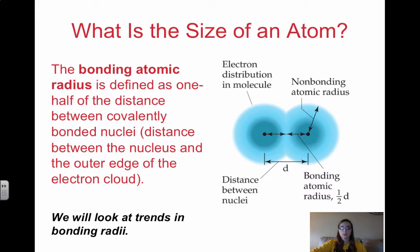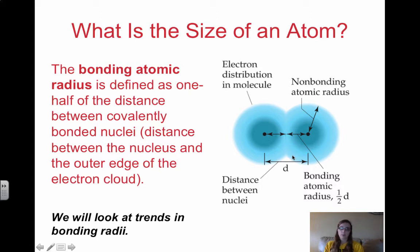First we're going to look at the size of an atom, focusing on the bonding atomic radius. The bonding atomic radius is defined as one half the distance between covalently bonded nuclei — essentially the distance between the nucleus and the outer edge of the electron cloud. When we focus on atomic radii we're going to be looking at trends within the bonding radii; non-bonding is a little bigger but we'll focus on bonding.